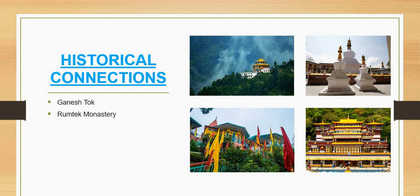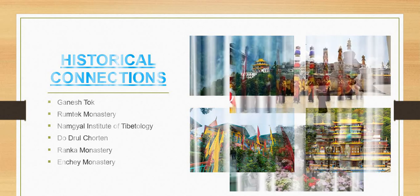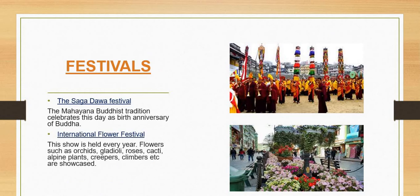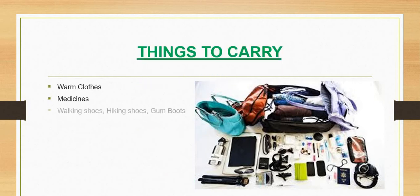Historical connections include Ganesh Tok, Rumtek Monastery, Namgyal Institute of Tibetology, Dodrul Chorten, Ranka Monastery, and Enchey Monastery. Festivals include the Saga Dawa Festival, a Buddhist tradition celebrating the anniversary of Buddha, and the International Flower Festival, held every year showcasing orchids, gladioli, roses, cacti, alpine plants, creepers, and climbers.